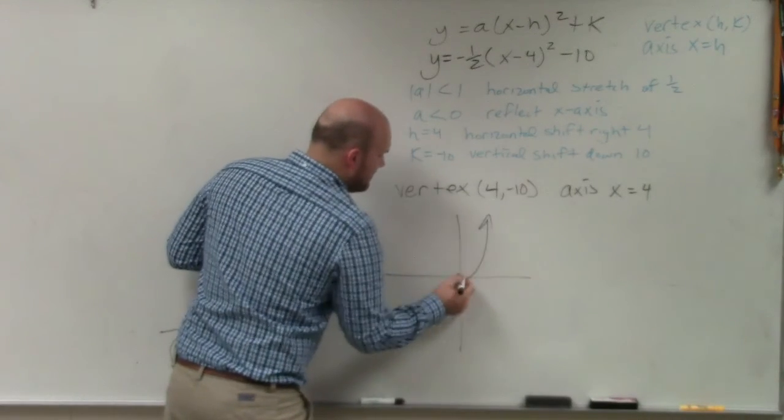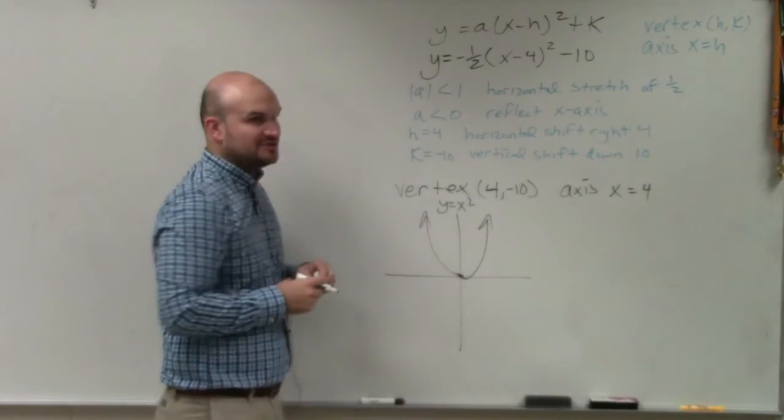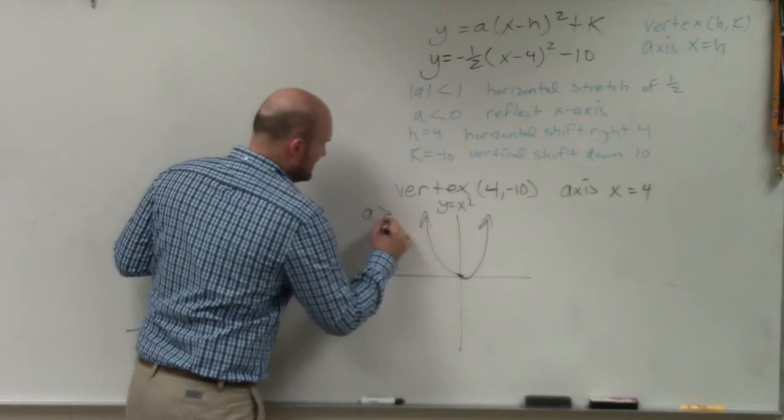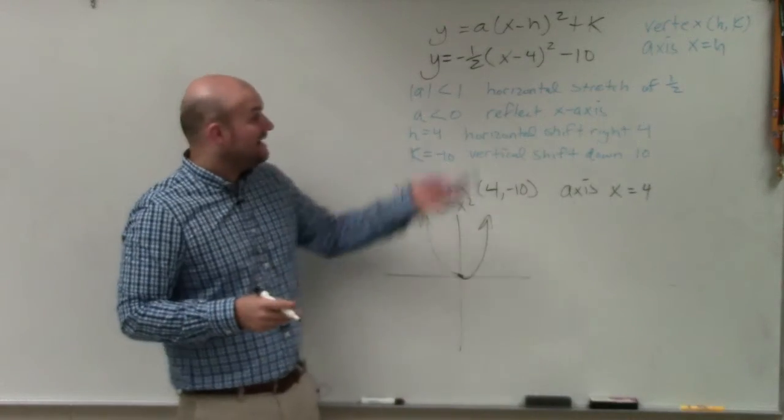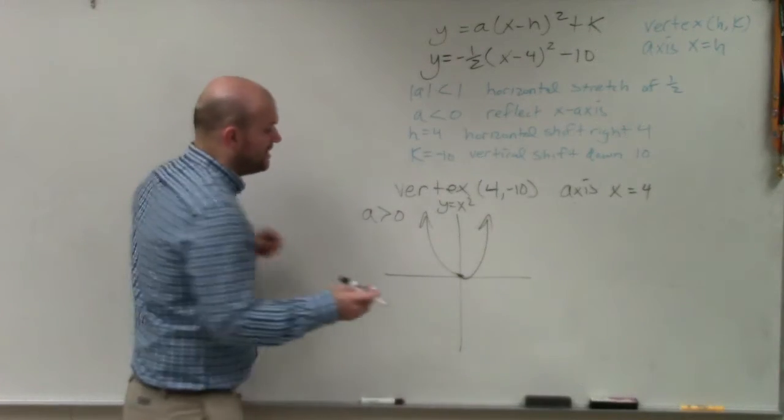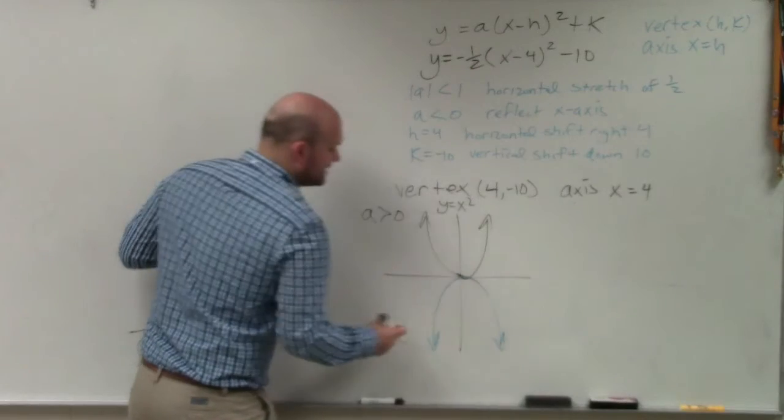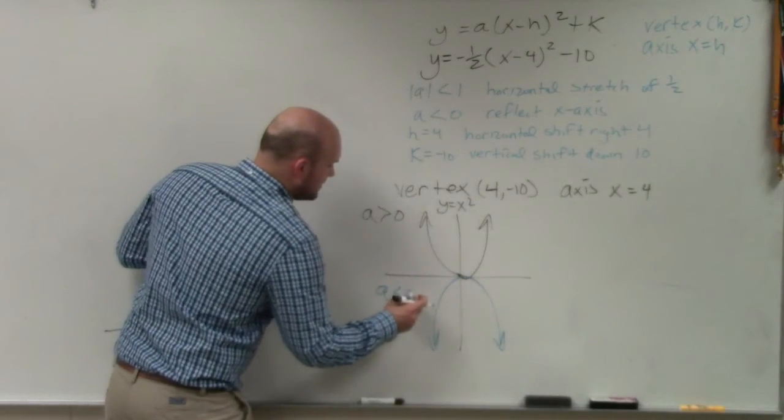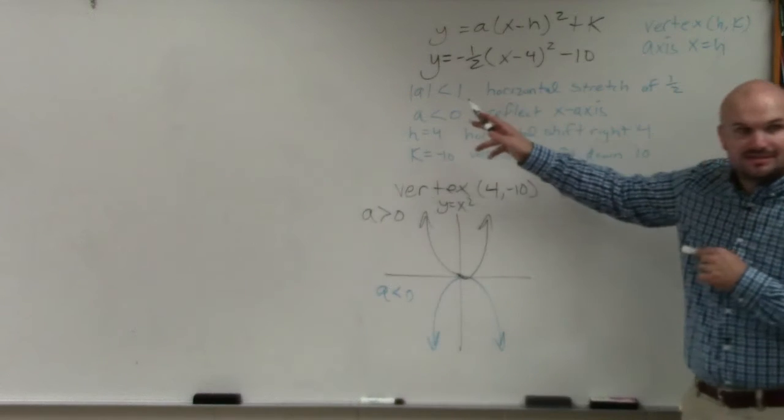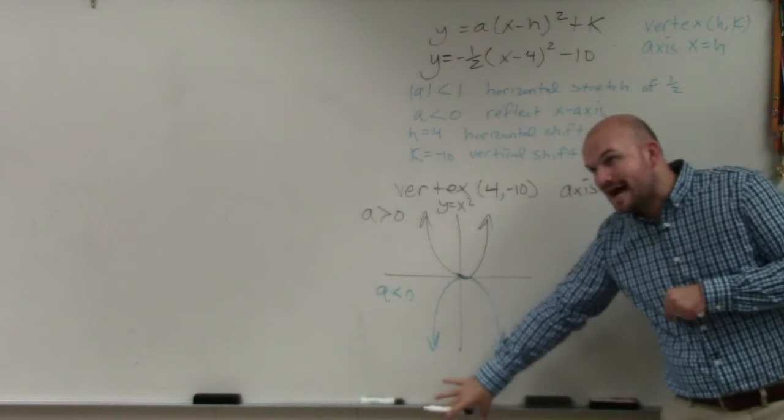So if you guys remember, this is what the graph looks like without any transformations. It opens up. This is when a is greater than 0. Any number, it doesn't matter. Whatever a is, as long as it's positive, it's greater than 0. However, when we talk about a reflection, all that's doing is now reflecting the graph over the x-axis. That's when a is less than 0. So do we have a being less than 0? Yes, it's negative.